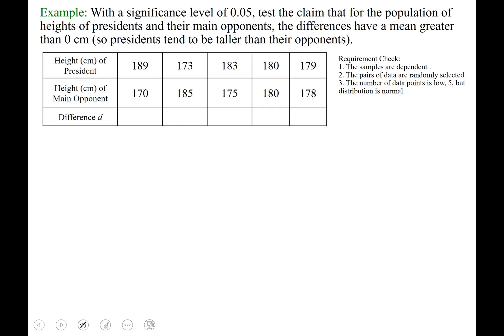Let's try an example. With a significance level of 0.05, test the claim that for the population of heights of presidents and their main opponents, the differences have a mean greater than 0 centimeters. That would mean that presidents tend to be taller than their main opponent.